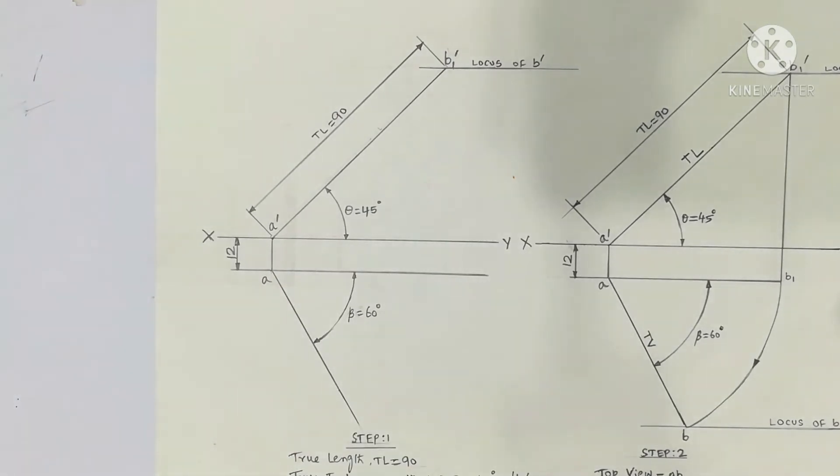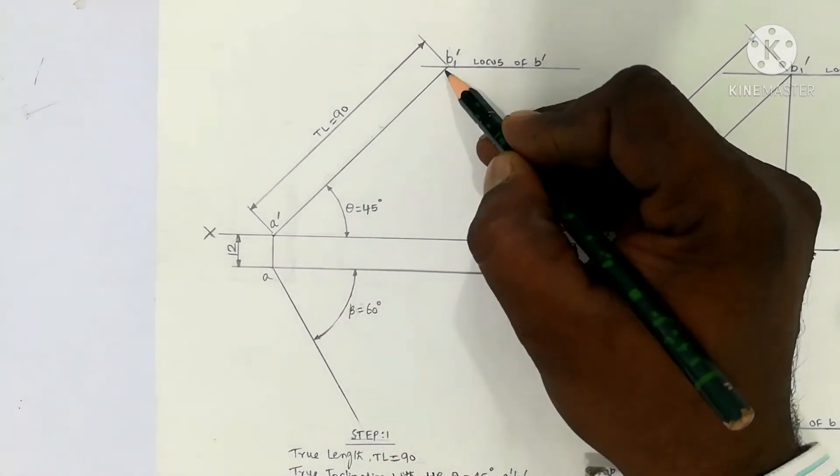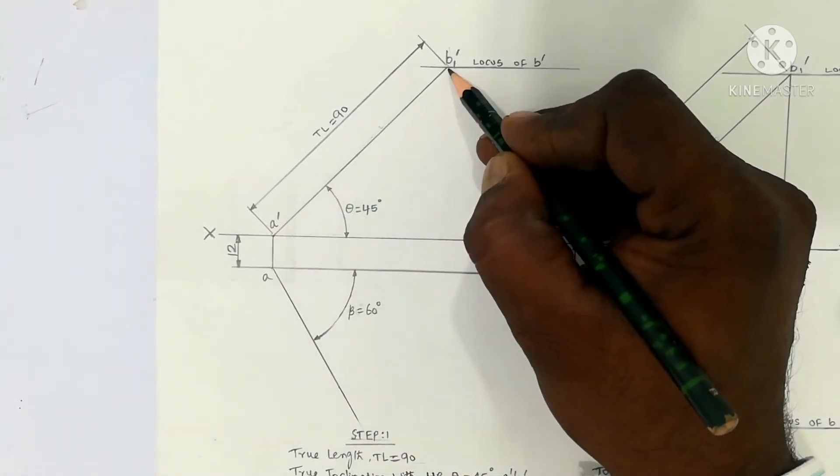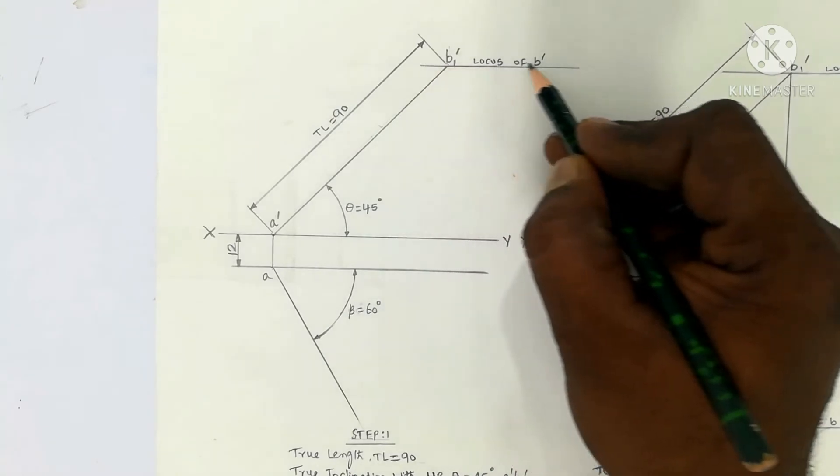True length is 90mm. So at 45 degree angle, draw an inclined line and mark as A' and B', which is the true length of the line, 90mm. Your locus line is parallel to XY.